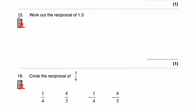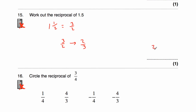Question 15: find the reciprocal of 1.5. When finding the reciprocal, I prefer to work with fractions, so convert to a top-heavy fraction first. 1.5 is 1 and a half, which as a top-heavy fraction is 3 halves (1 times 2 equals 2, plus 1 is 3, over 2). Then flipping 3 halves over gives 2 thirds. So the answer is 2 thirds.